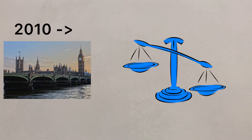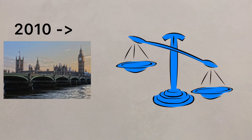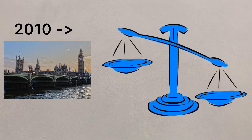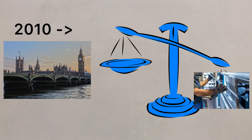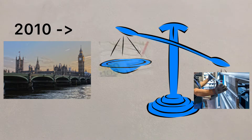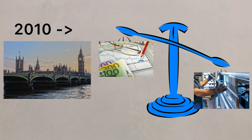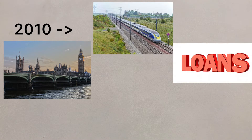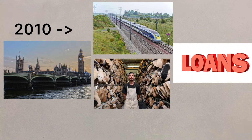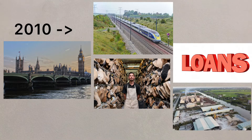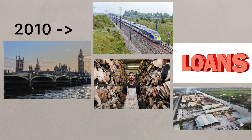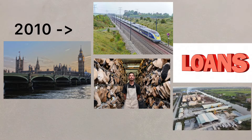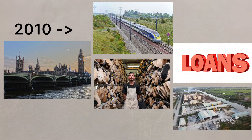From 2010 onwards, the government aimed to rebalance the economy by trying to rebuild the manufacturing sector, whilst trying to rely less on service industries such as the financial sector. Improvements to transport, helping small businesses get easier access to loans, encouraging investment in manufacturing and helping global firms to locate in the UK were all attempted to help the economy become more balanced and ultimately grow.